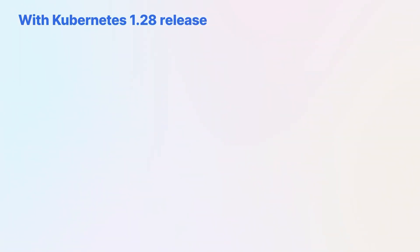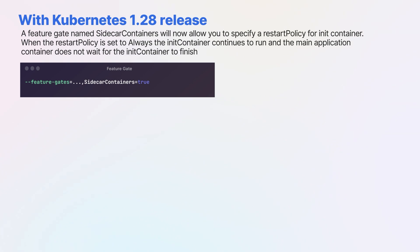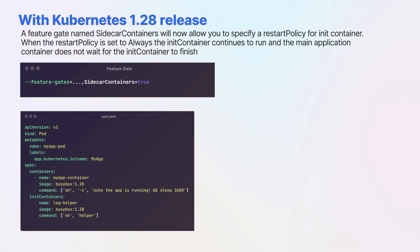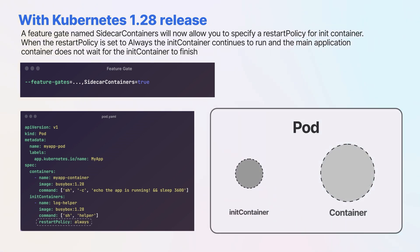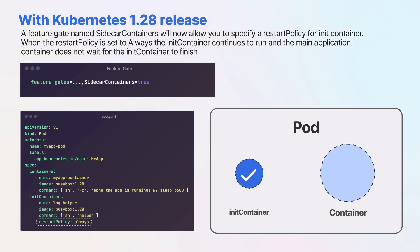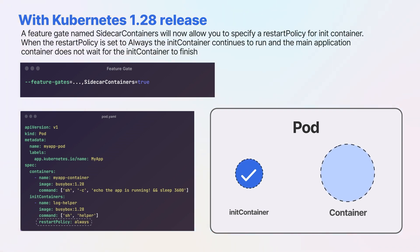With the Kubernetes 1.28 release, a feature gate named sidecar containers will now allow you to specify a restart policy for init containers. When the restart policy is set to always, the init container continues to run and the main application container does not wait for the init container to finish before starting. Instead of waiting for the sidecar container to finish, the kubelet starts the main pod containers as soon as the sidecar container init container begins and is in a ready state.